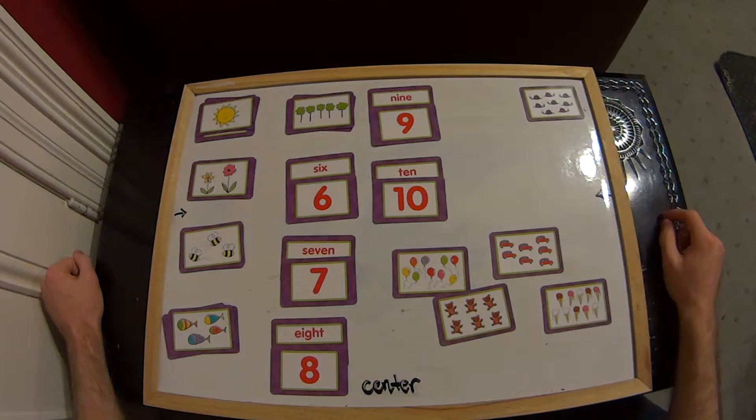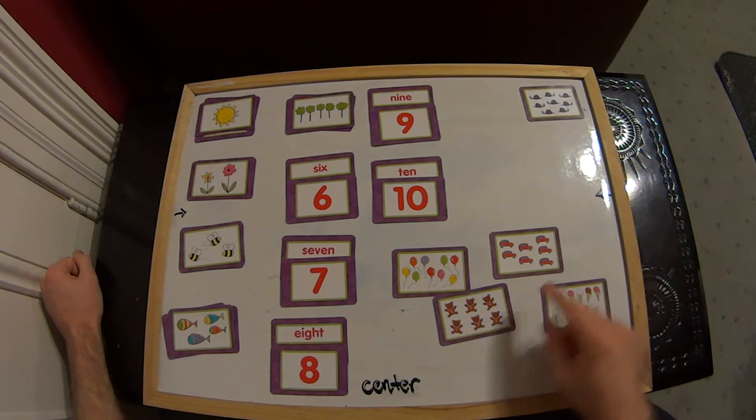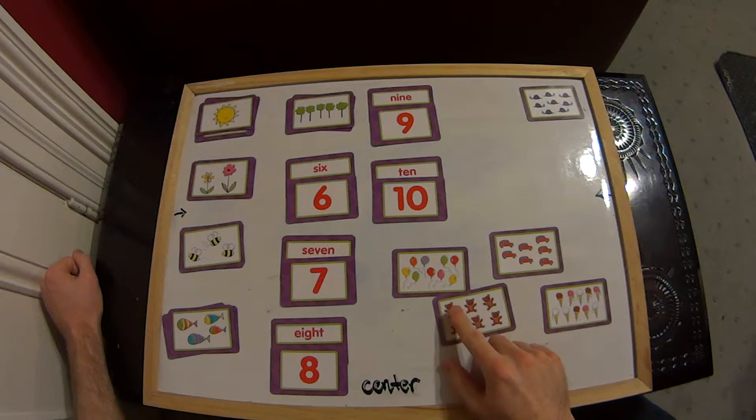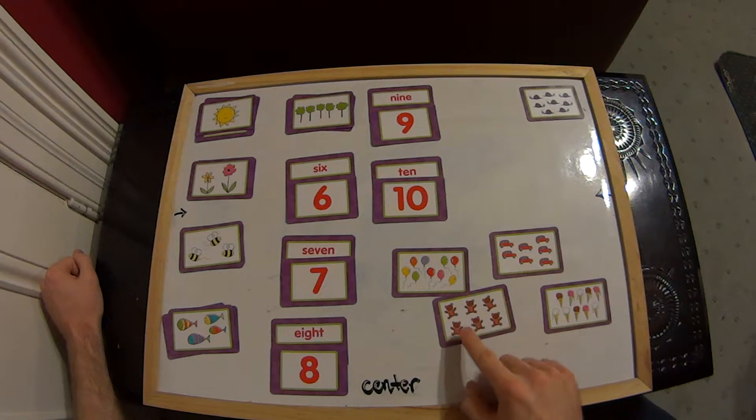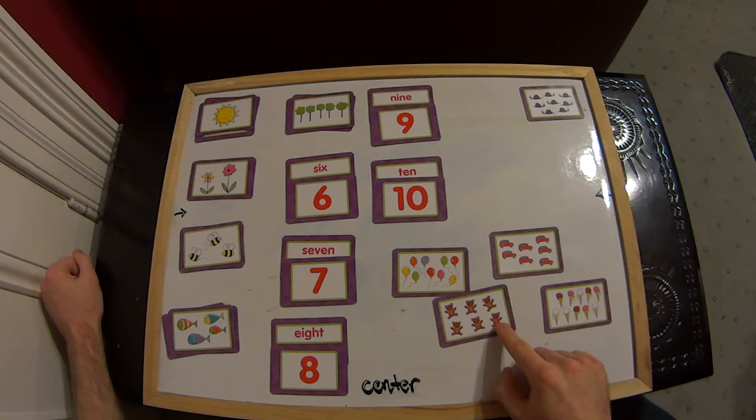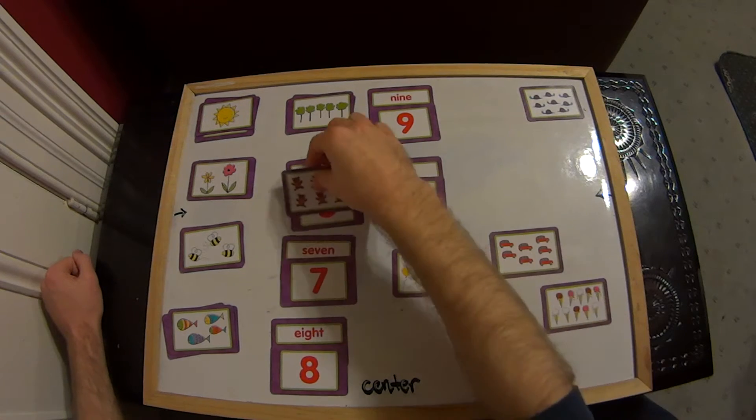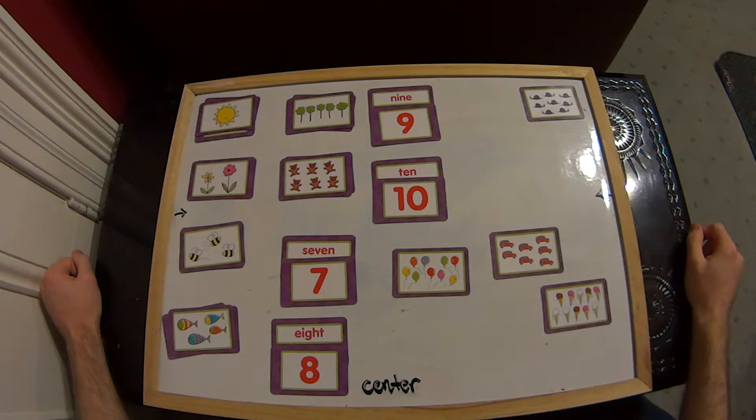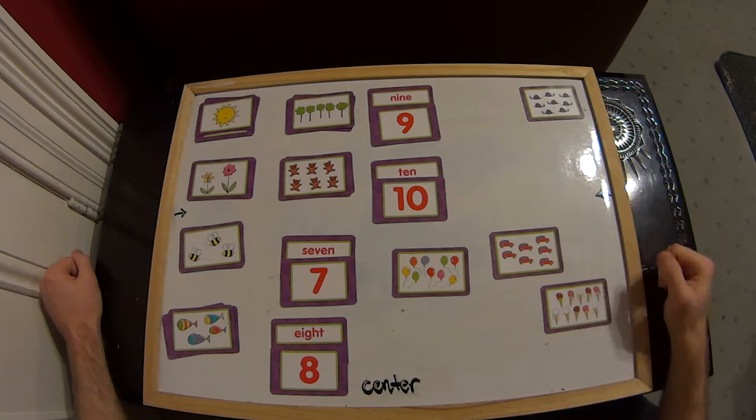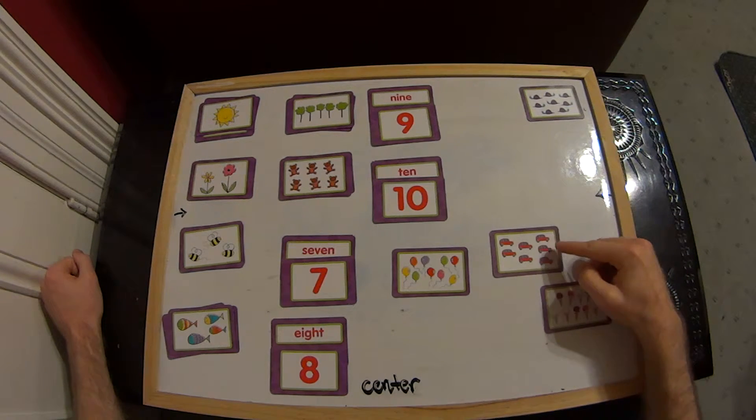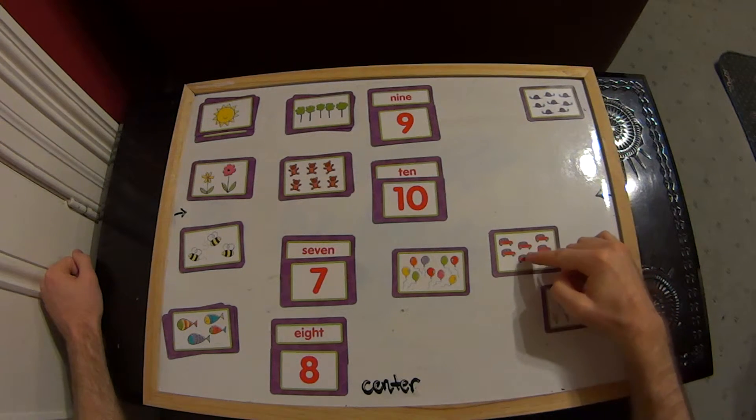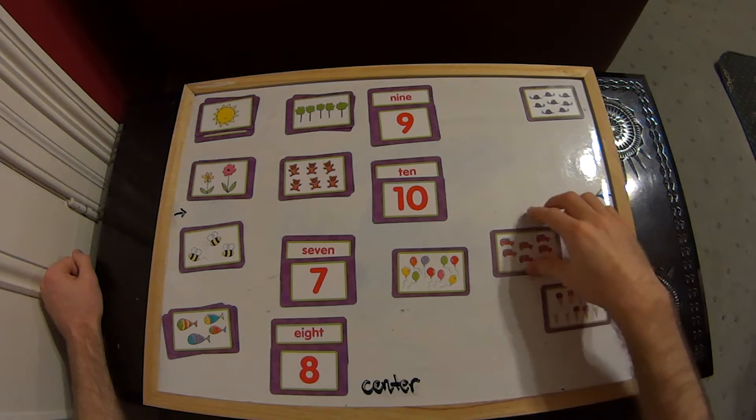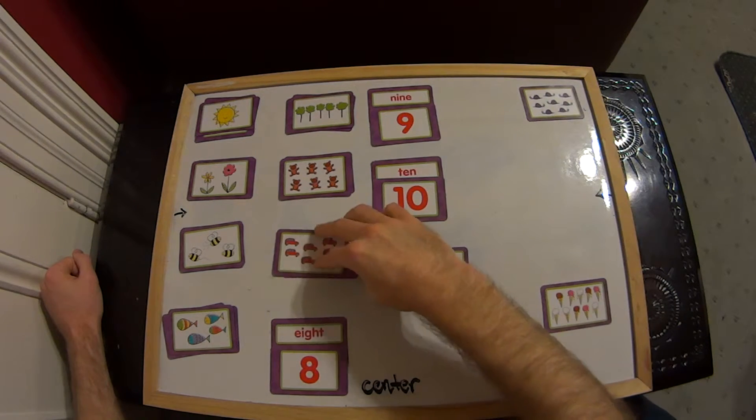Now 6. Which one of these do we think has 6? Maybe down here with the teddy bears? 1, 2, 3, 4, 5, 6. 6 teddy bears. Beautiful. 4, 5, 6, 7. Maybe the cars? 1, 2, 3, 4, 5, 6, 7. Excellent. Doing really well.